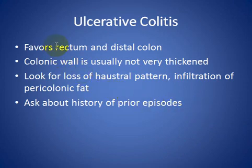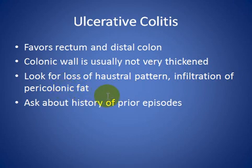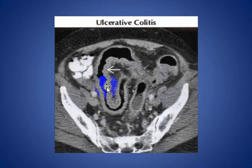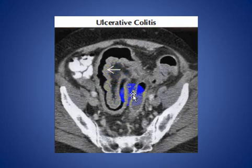Ulcerative colitis favors the rectum and distal colon. Colonic wall is usually not very thickened. Look for loss of haustral pattern and infiltration of the pericolonic fat. Ask about history of prior episodes. This patient with ulcerative colitis shows mural thickening of the sigmoid colon with loss of haustra, and this patient has an acute flare of chronic ulcerative colitis.